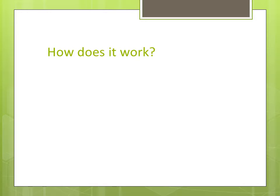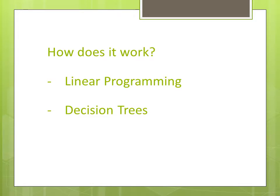We'll now talk about three specific techniques that you learn about if you choose to do an MBA, about how you can actually solve these kinds of problems and get the outcome you desire. The first technique is linear programming. The next technique is a decision tree, which is a logical flow of your thought mapped out with certain payoffs associated with it. And the third one is a mathematical simulation.